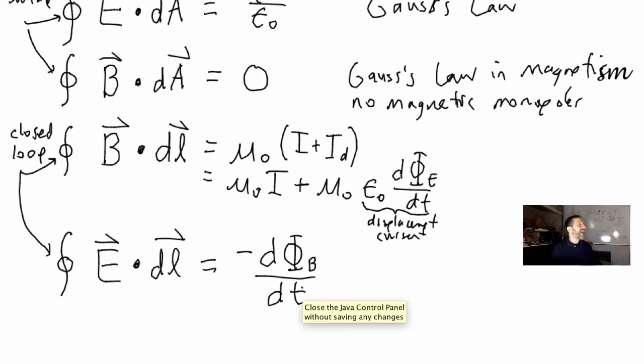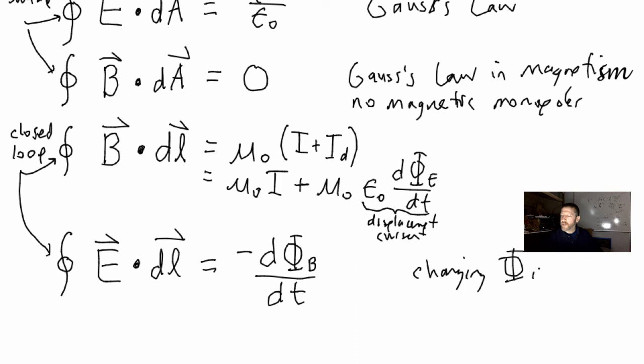Now if you guys find some magnetic monopoles, then we probably could have magnetic current, but at this point we don't have that. If we find magnetic monopoles, all these equations become much more symmetrical. This says you can create an EMF, a changing flux, changing phi_B creates an electric field, or an EMF. Okay, sweet.